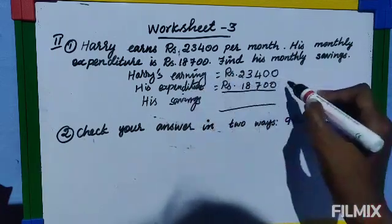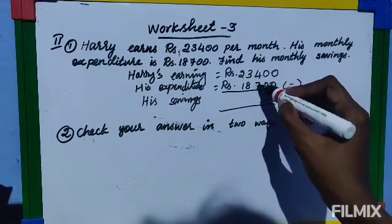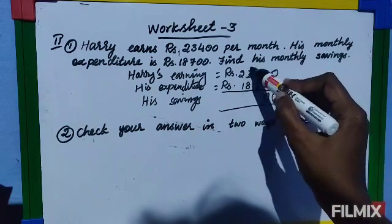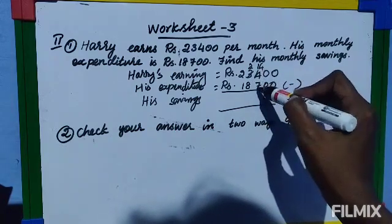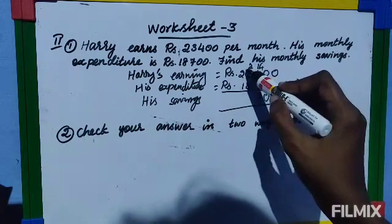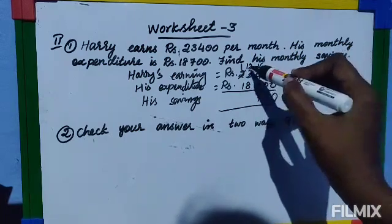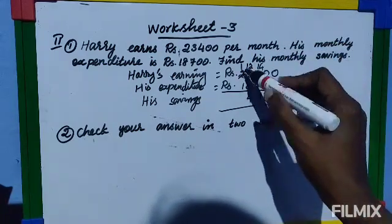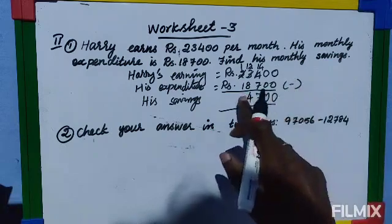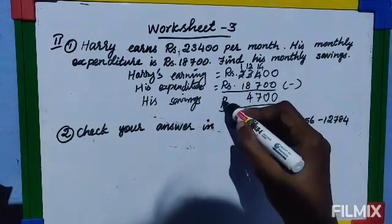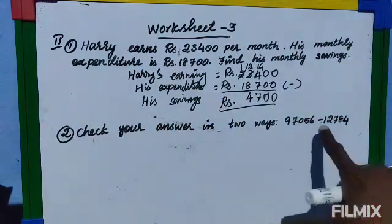To find his savings, you subtract. 0 minus 0 is 0, 0 minus 0 is 0. Since 4 is smaller than 7, you borrow from 3 — 2 remains, and this becomes 14. 14 minus 7 is 7. Since 2 is smaller than 8, borrow from 2 — 1 remains, this becomes 12. 12 minus 8 is 4. 1 minus 1 is 0, so his savings is rupees 4,700.